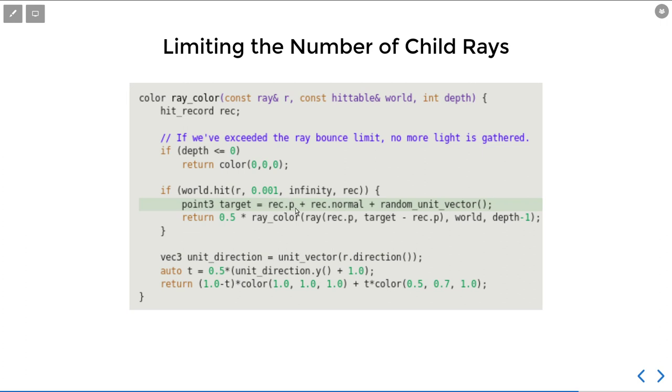And then we just use this fact. For each recursion, we subtract the depth by one to get the result. And also we use our random unit vector function before. We actually get the Lambertian reflection.